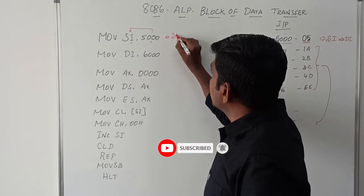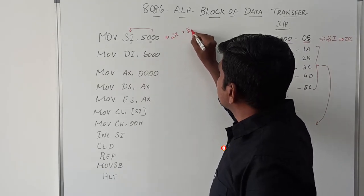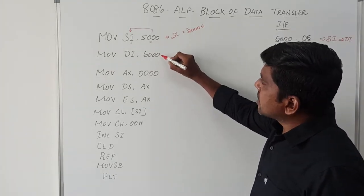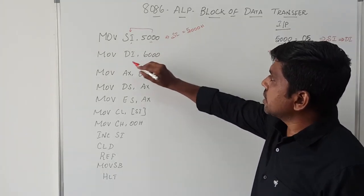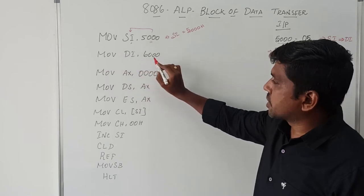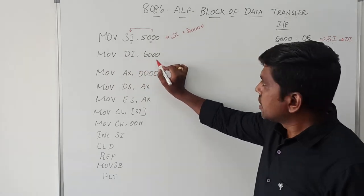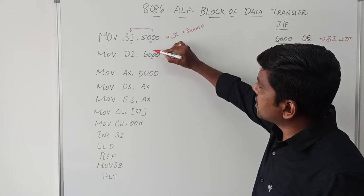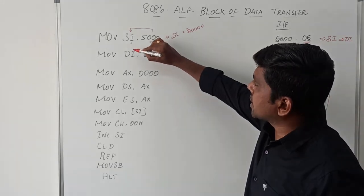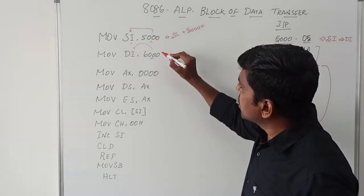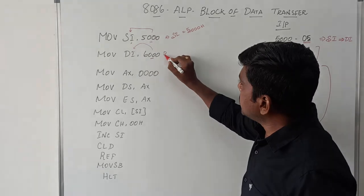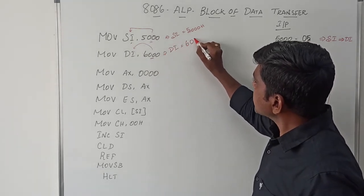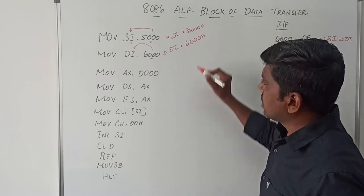Then initialize the destination index register with the instruction MOV DI, 6000H. This 6000H is also immediate data. After execution of this instruction, the data is transferred to DI, so DI holds the value 6000H.